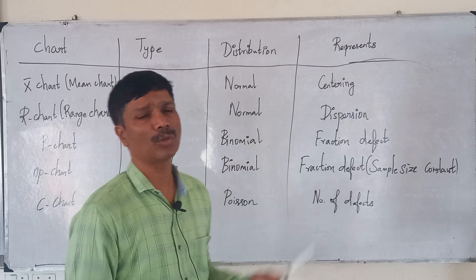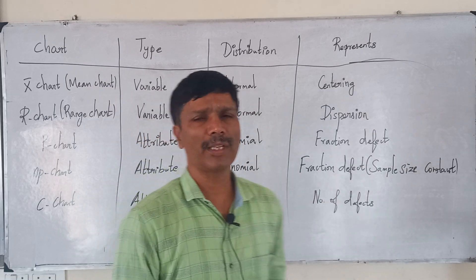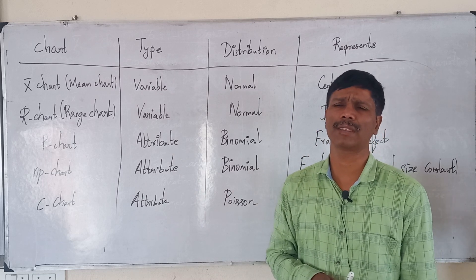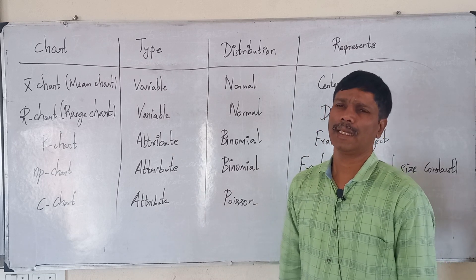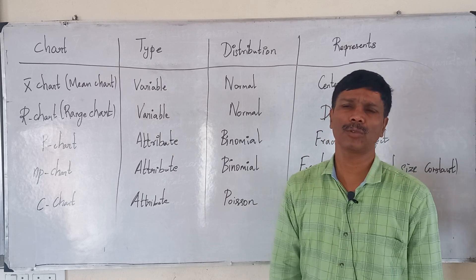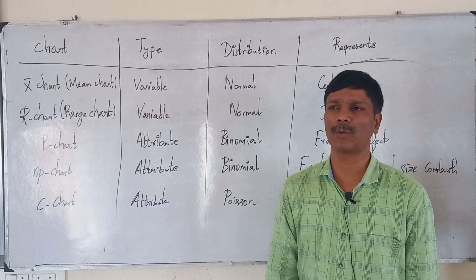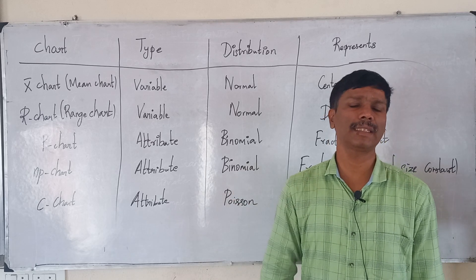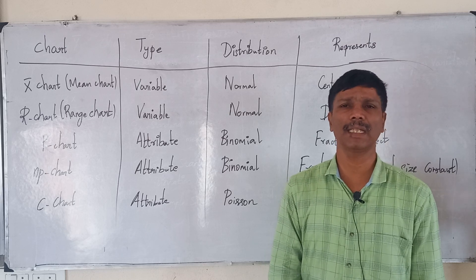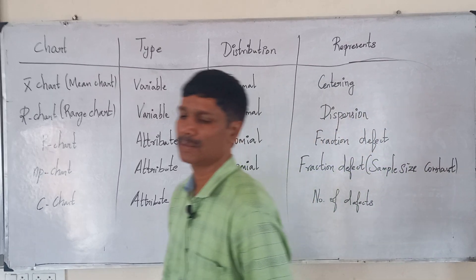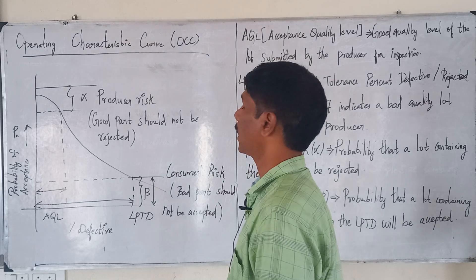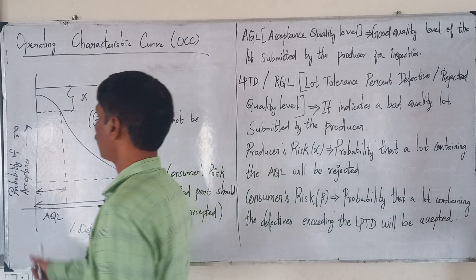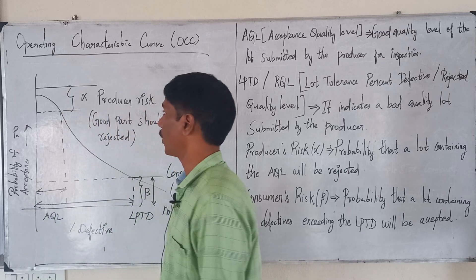This is a question-prone zone. If you look at the exam questions, you can get confused between chart types. Look at the learning chart to practice. The Operating Characteristic Curve, or OCC, relates to the probability of acceptance.